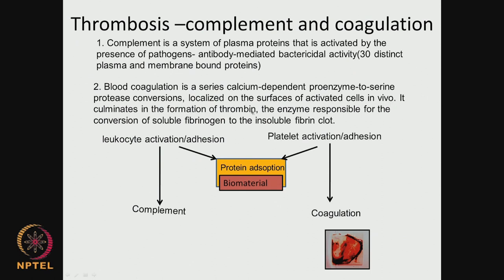Thrombin is an enzyme which converts fibrinogen to fibrin. Fibrin is an insoluble blood clot — when there is a wound, blood comes out and after some time it starts clotting; that clot is called fibrin. This fibrin forms from fibrinogen via the enzyme thrombin, which converts fibrinogen into fibrin — and this is the blood clot. If thrombin is not formed, blood will keep oozing and will not clot. Ultimately you need to form this fibrin. You can see this blood clot on a polymer or biomaterial surface, so both complement and coagulation are very important.